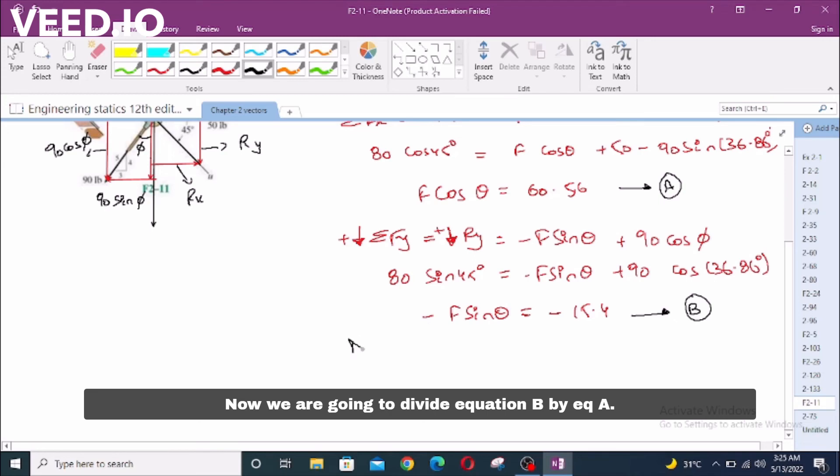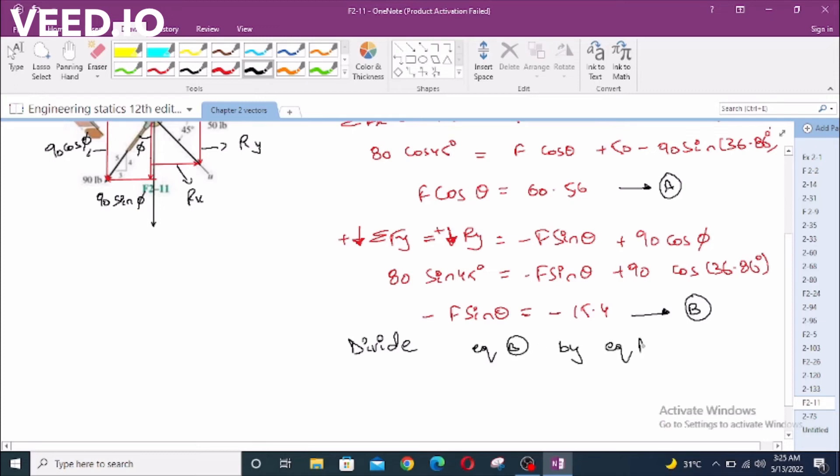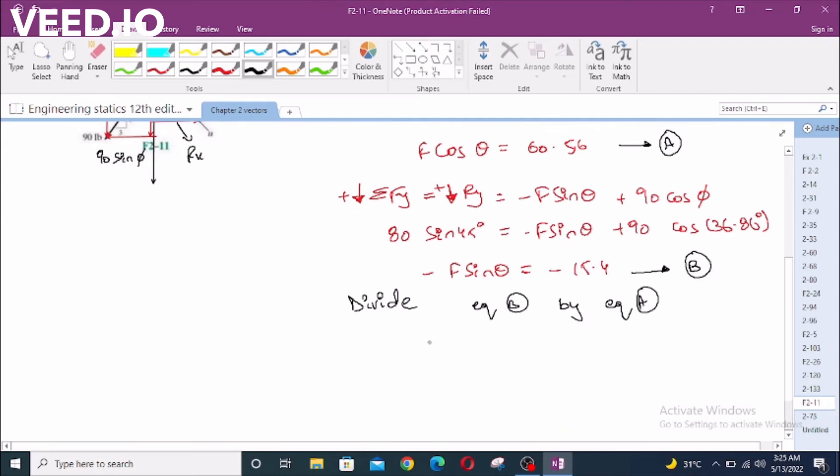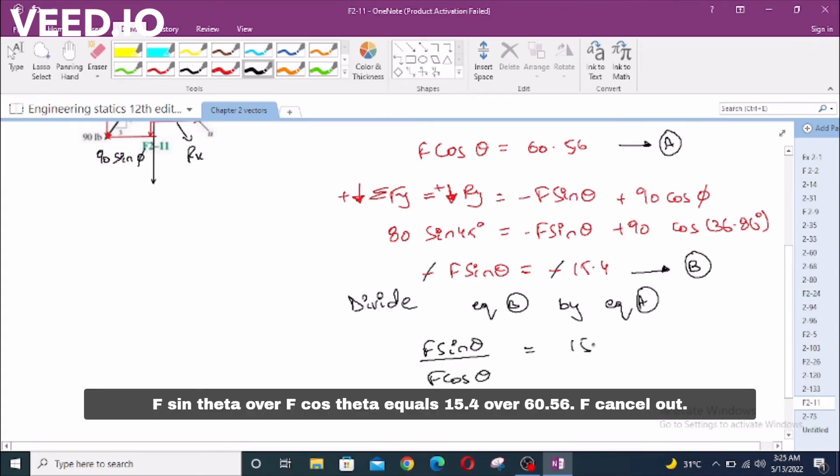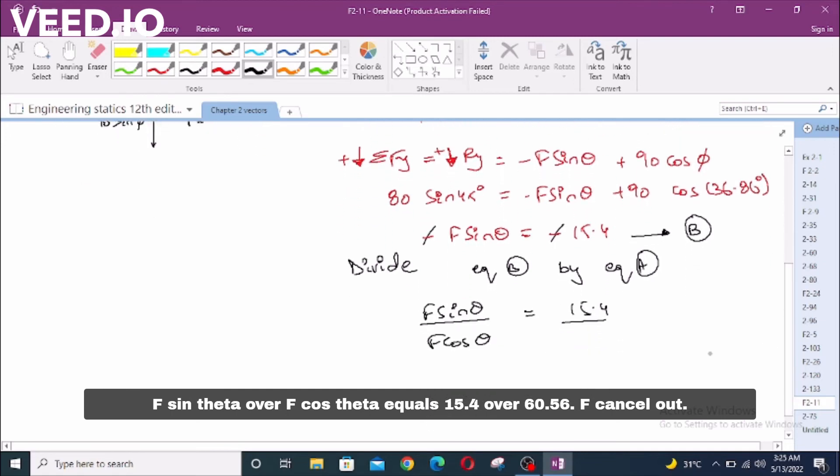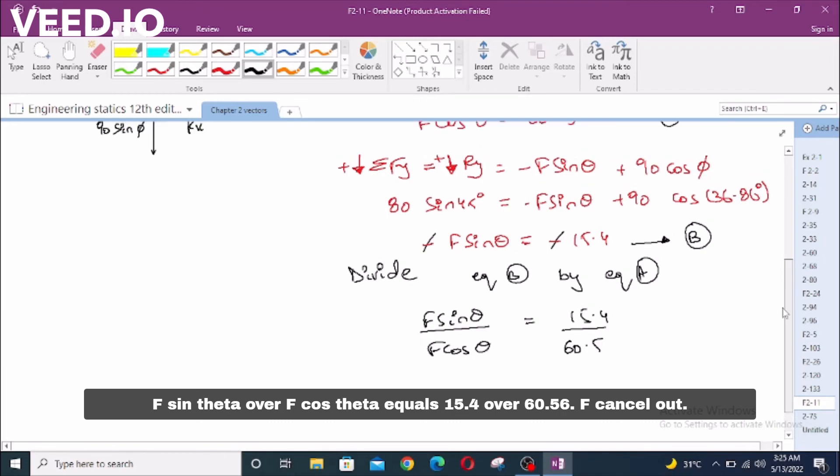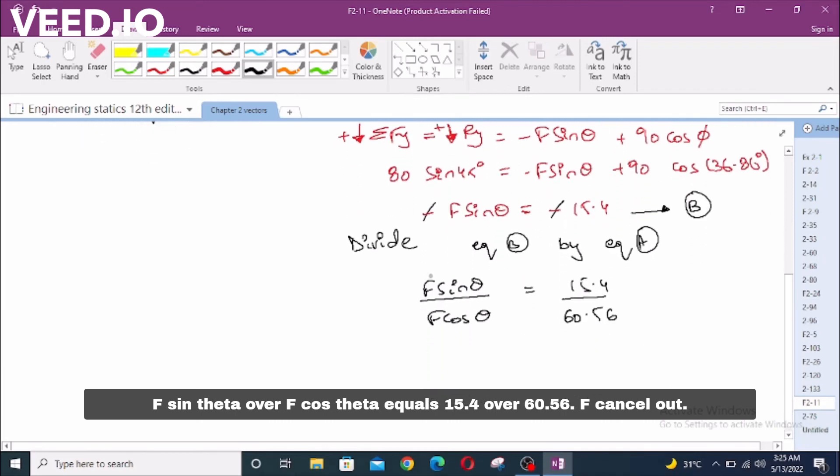Now we are going to divide equation B by A. F sin theta over F cos theta equals 15.4 over 60.56. This will cancel out. Now tangent theta equals 0.2543, theta equals 14.3 degrees.